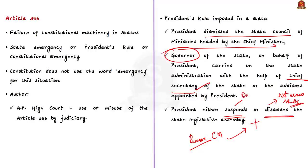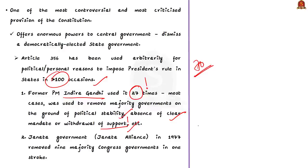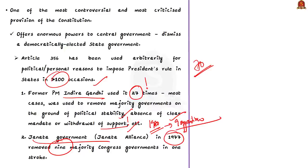Due to these enormous powers, the central government is notoriously known for dismissing democratically elected state governments. Article 356 has been used in an arbitrary manner for political and personal reasons. In the last 70 years of independence, it was used more than 100 times. Former Prime Minister Indira Gandhi used it 27 times, removing majority governments on grounds like political instability, absence of clear mandate, and withdrawal of support. After the Emergency, the Janata government in 1977 removed nine majority Congress state governments in one stroke. In 1980, when Ms. Gandhi returned to power, she again removed nine opposition majority governments.